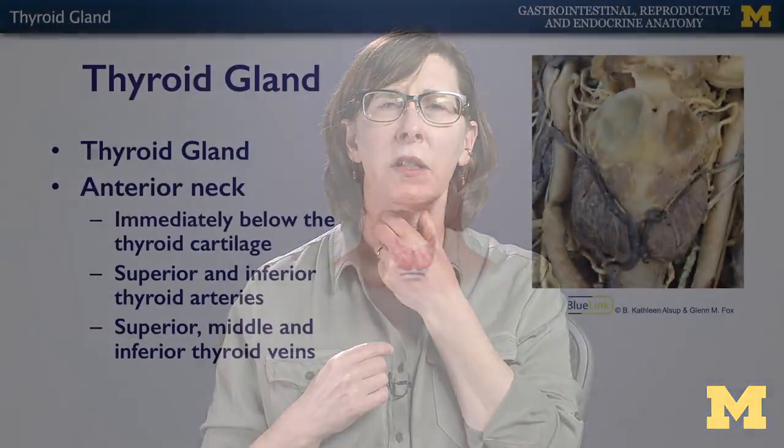The thyroid gland is in your anterior neck, and it's easy to find. It's easier to find in males than females because males have a very prominent thyroid cartilage, which is also known as the Adam's apple. Females are a little bit harder to find, but it's just immediately inferior to the thyroid cartilage.